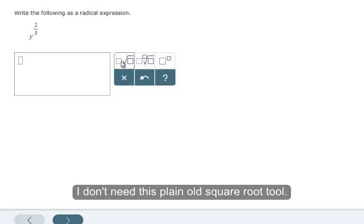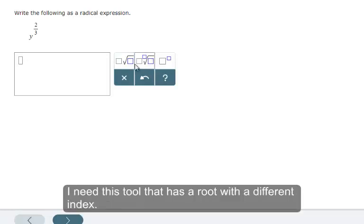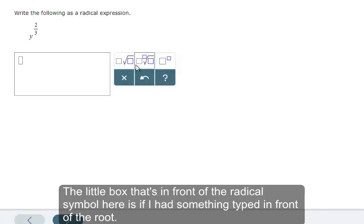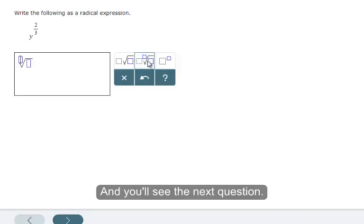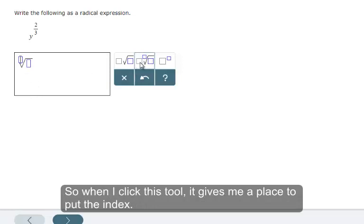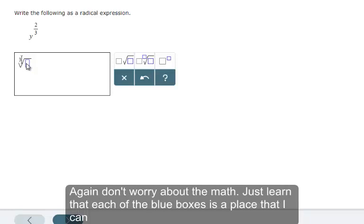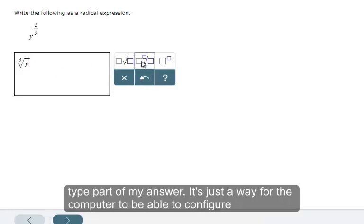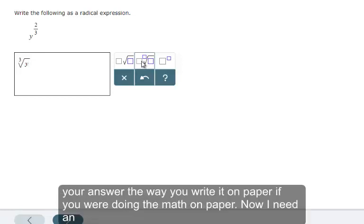I don't need this plain old square root tool. I need this tool that has a root with a different index. The little box that's in front of the radical symbol here is if I had something typed in front of the root. And you'll see that on the next question. So when I click this tool, it gives me a place to put the index. Again, don't worry about the math. Just learn that each of the blue boxes is a place that I can type part of my answer. It's just a way for the computer to be able to configure your answer the way you would write it on paper if you were doing the math on paper.